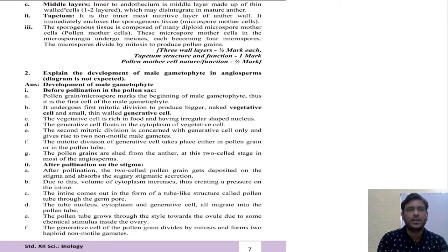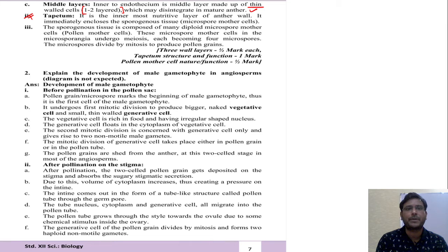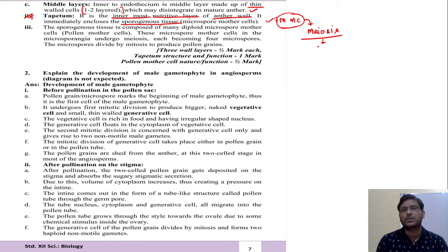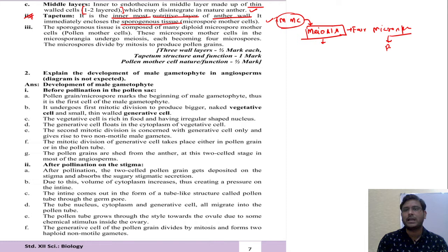Middle layer is inner to the endothecium and is made up of thin-walled cells. There are minimum 1–2 layers which may disintegrate in the mature anther. Tapetum is the innermost layer and is the nutritive layer of the anther wall. It immediately encloses the sporogenous tissue — the microspore mother cells. These microspore mother cells undergo meiosis to form 4 microspores, which become pollen grains.